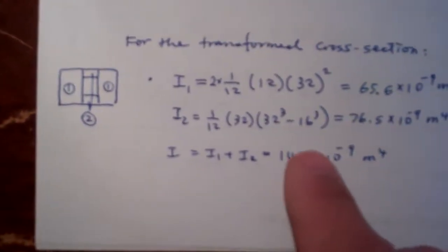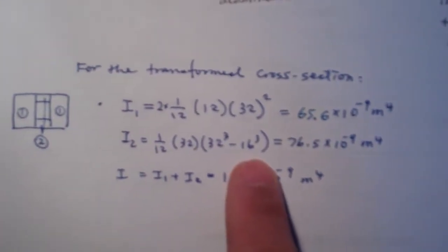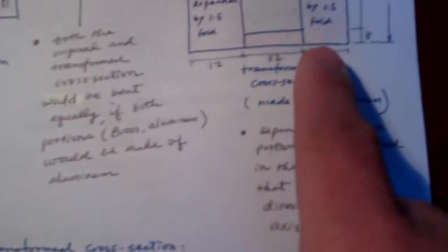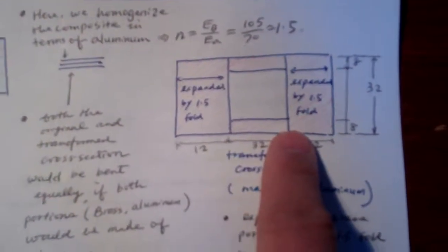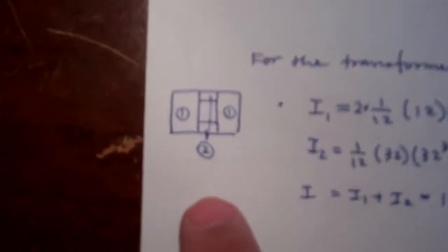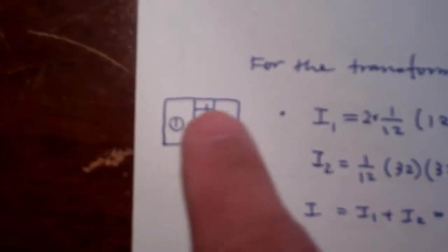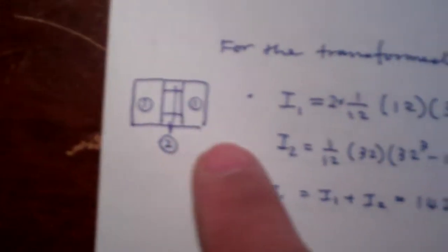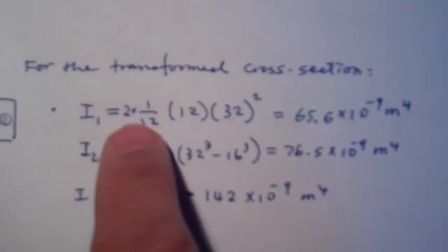And then we calculate the moment of inertia. So the moment of inertia is based upon the transformed cross section. And here I divide it into two parts. One on the two sides, and two on the top and the bottom.